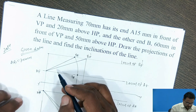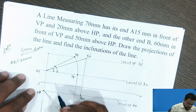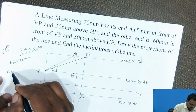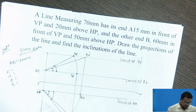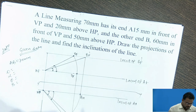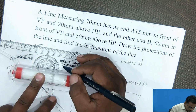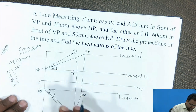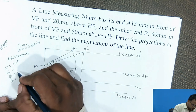The next step is to calculate the angles — the apparent angles as well as the true length inclination. I need to calculate theta, alpha, phi, and beta. First, I measure theta and I am getting theta equal to 26 degrees. Then I calculate phi and I am getting phi equal to 39 degrees.